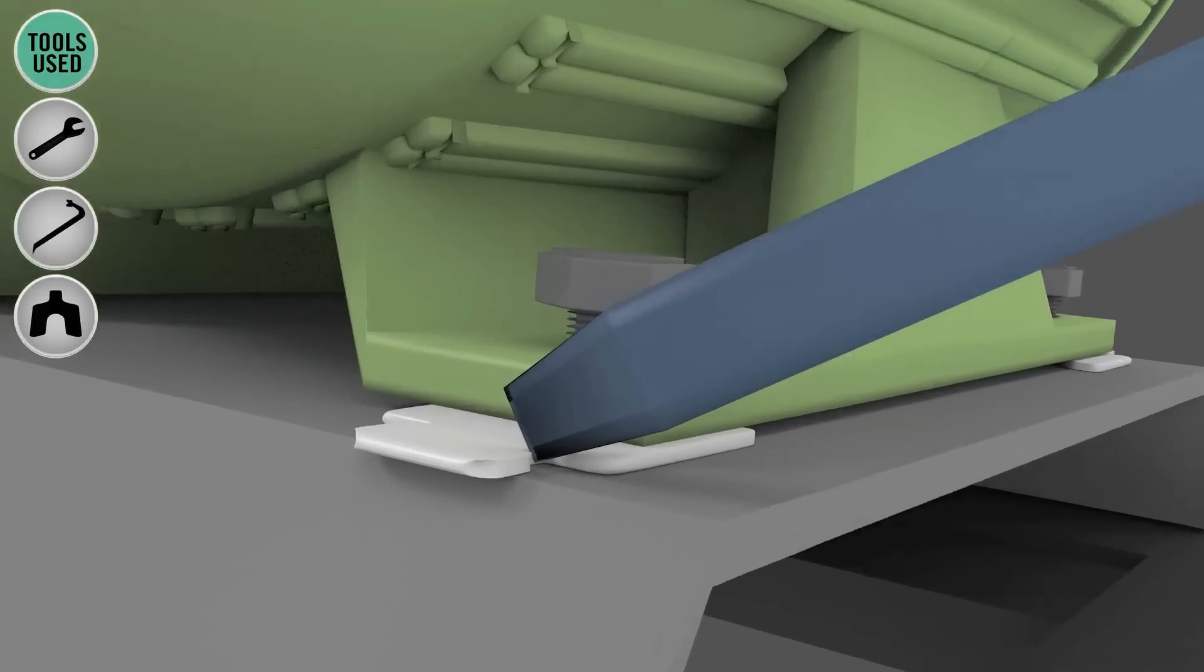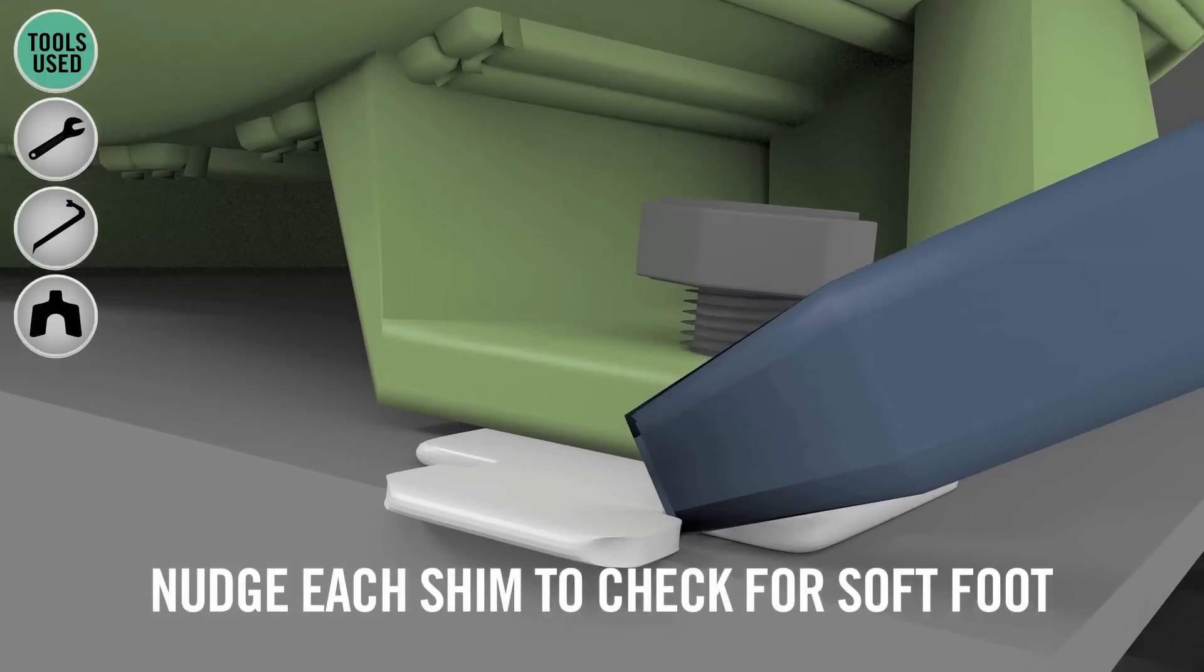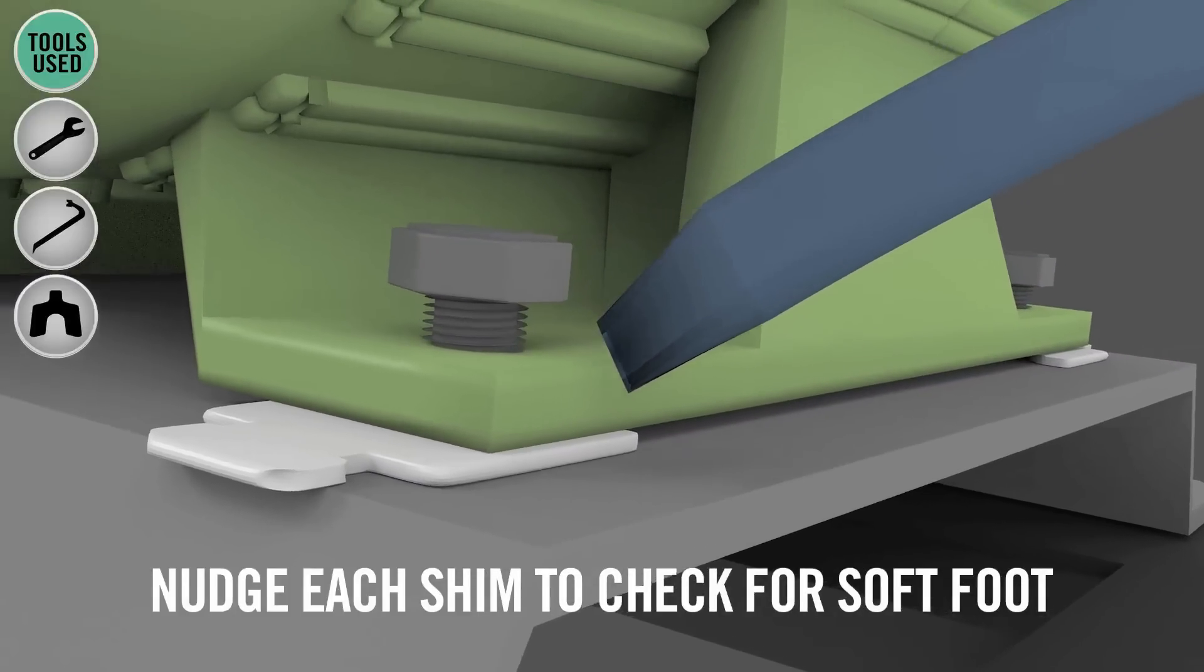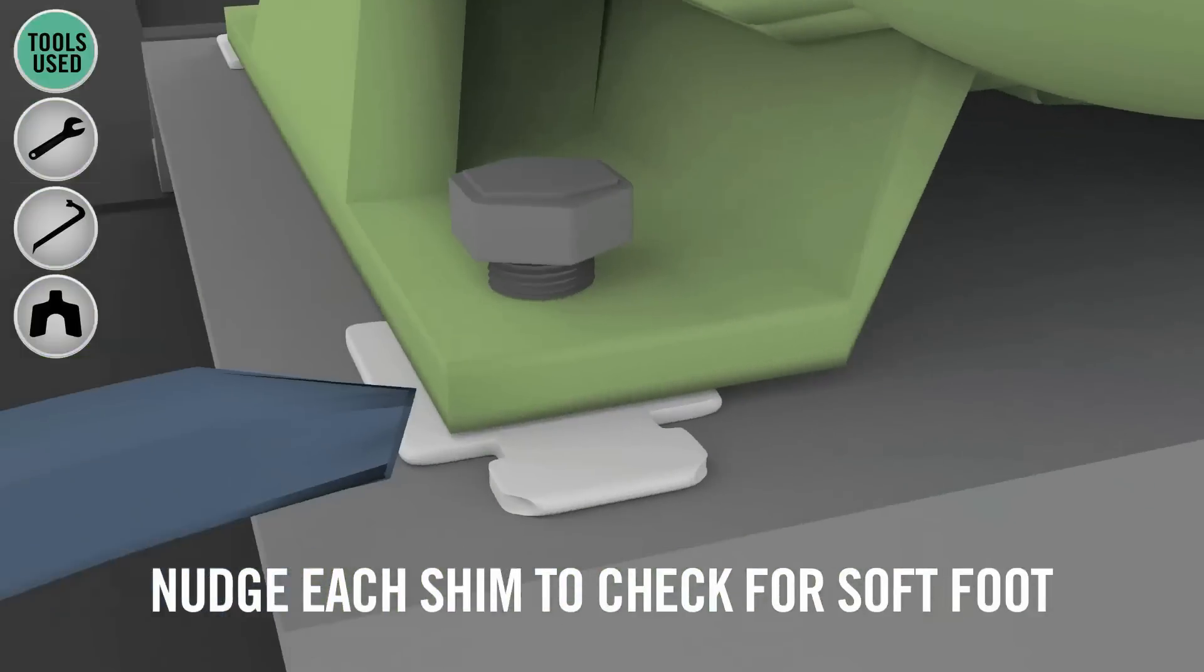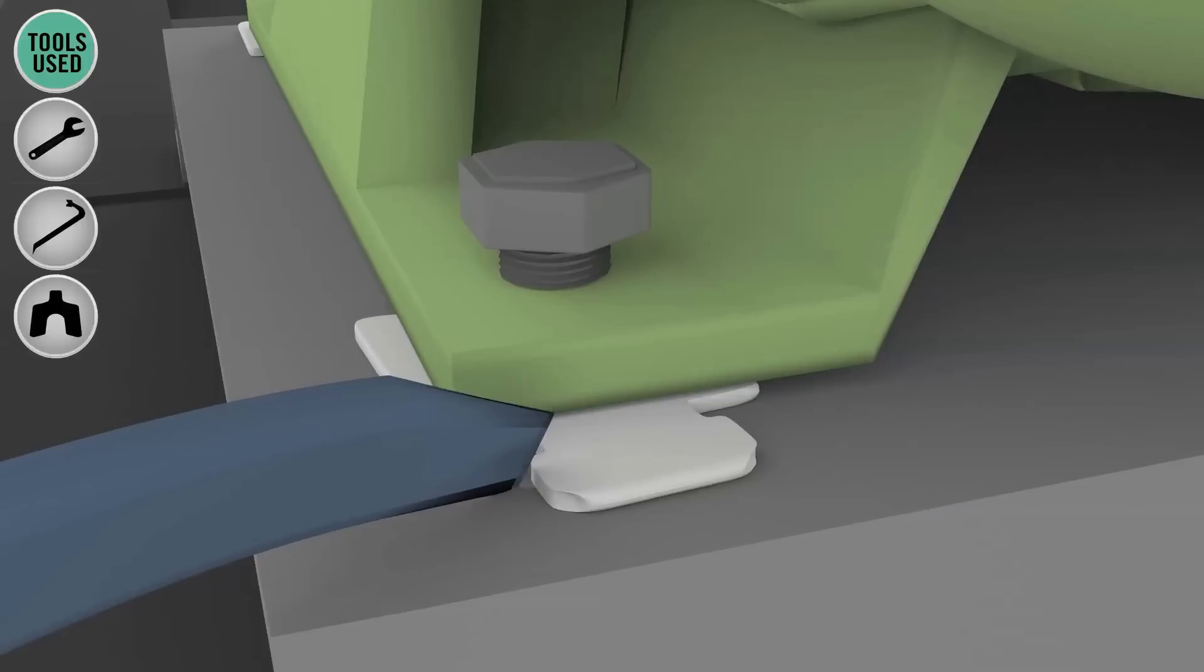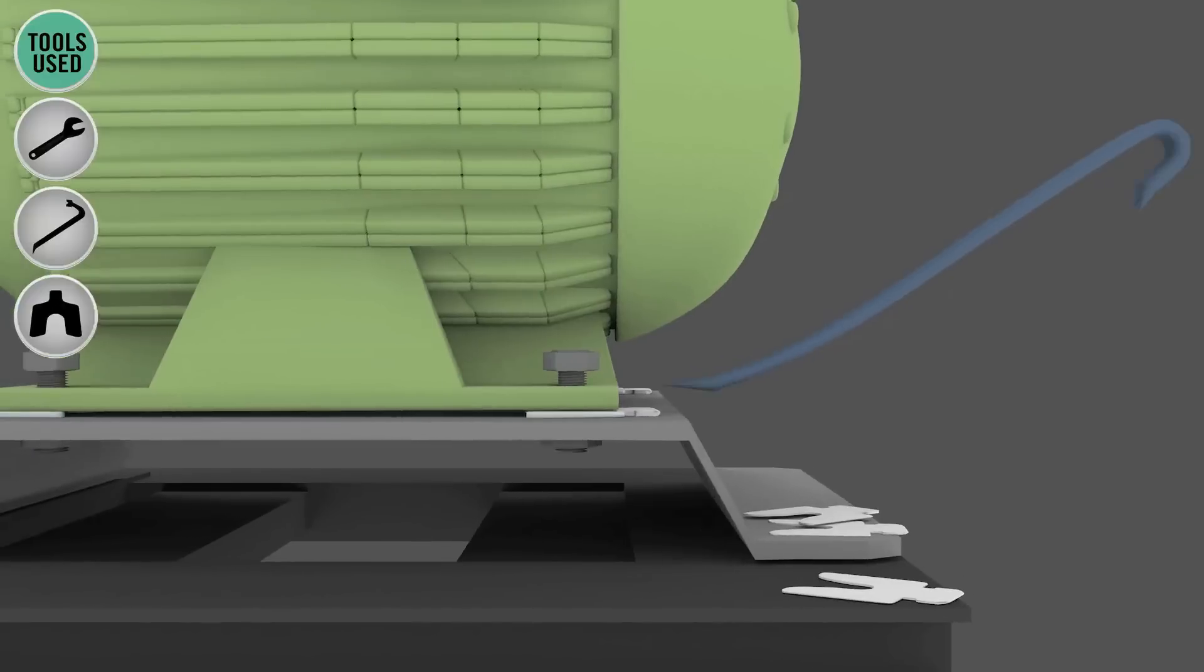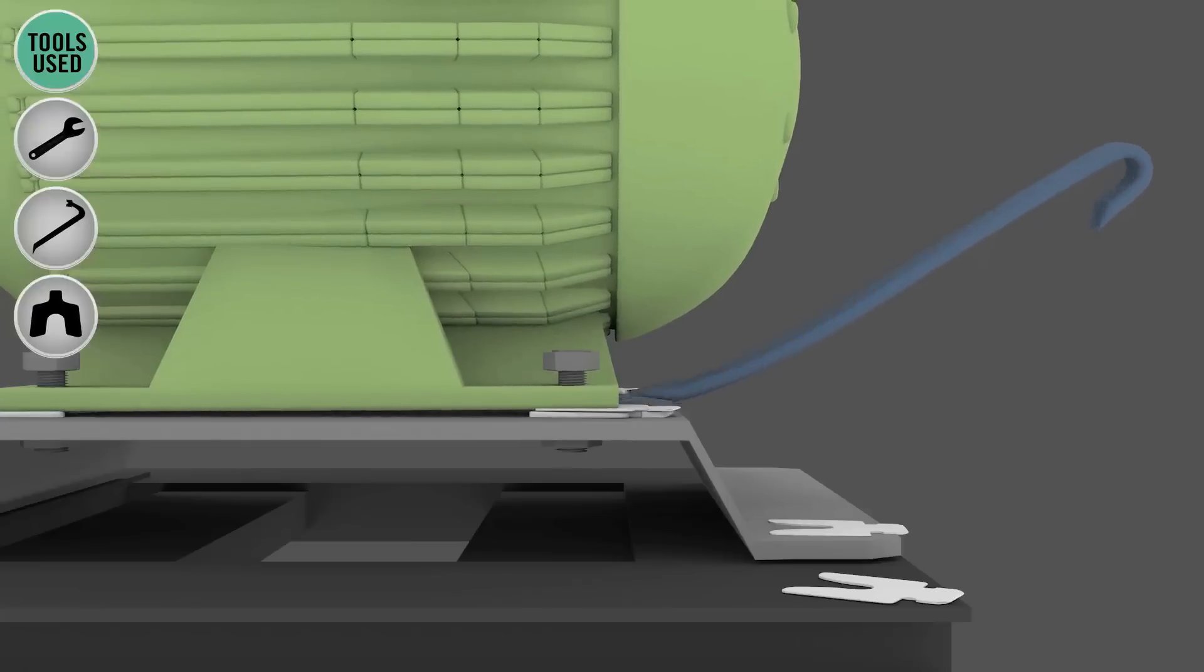So you want to make sure each foot is carrying the same amount of weight. Test this with all the bolts still loose by nudging the shims under each foot. See, that's obvious soft foot. This leg is sitting slightly higher than the rest, so weight is not being equally distributed. Add more shims of appropriate thickness until it's a snug fit.